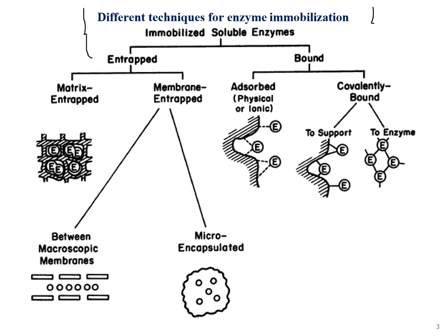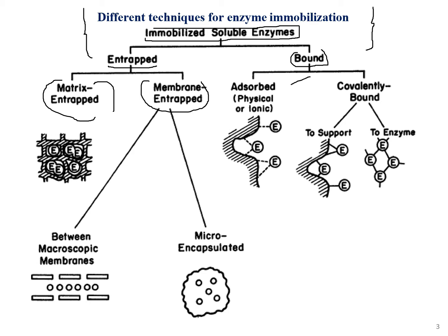There are different techniques under which immobilization works. For immobilized soluble enzymes, there are two methods: entrapment and bound. Under entrapment, immobilization takes place through matrix entrapment or membrane entrapment. Under bound, it takes place through adsorption — which can be physical or ionic — or through covalent bonding.